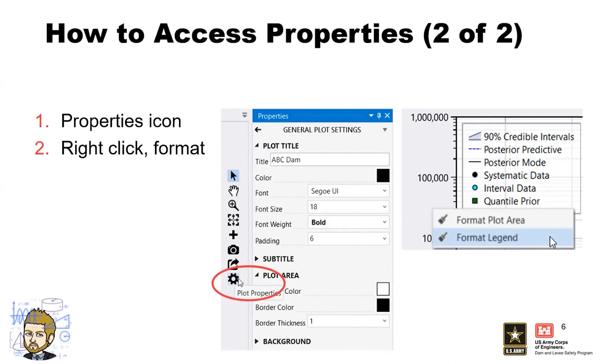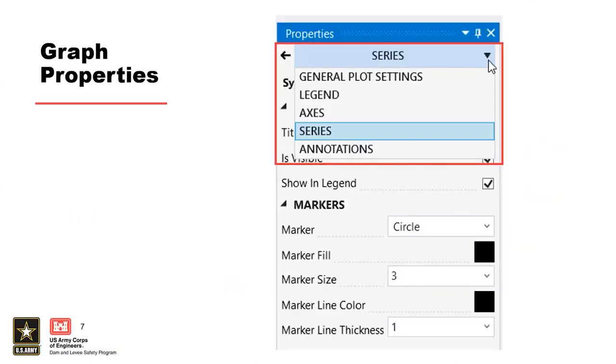You have these notes and this slide deck, so if you ever forget how to do something you can look back at these and it'll help you out. The main menu directs you to the general plot settings. Use the drop down menu at the top to pick which element you'd like to edit.